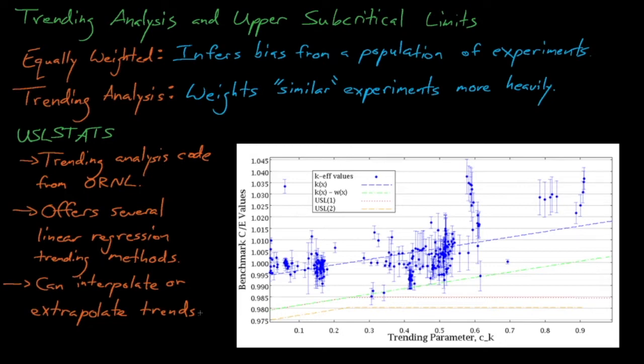This trending parameter, x, can be any number of things. Some of the most common trending parameters include the system's EALF, or the energy corresponding to the average lethargy of fission, which is a good metric for how fast or how thermal a system's neutron spectrum is. The system's H to X ratio is another good metric for the neutron spectrum. And again, the H to X ratio is the ratio of H atoms to all X fissile atoms.